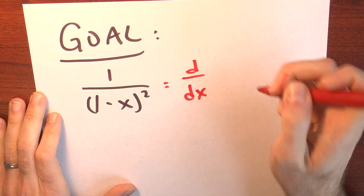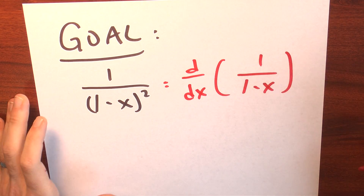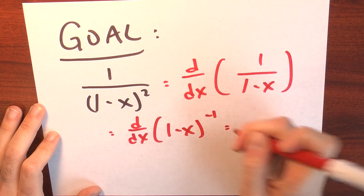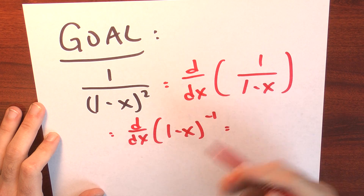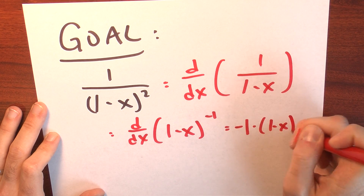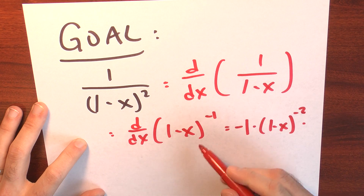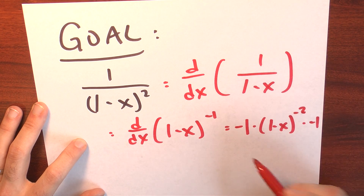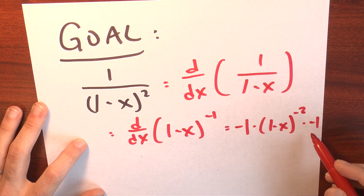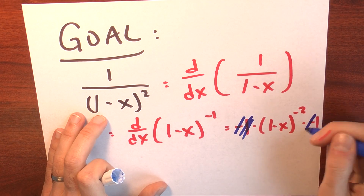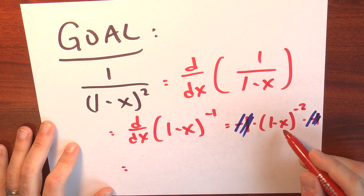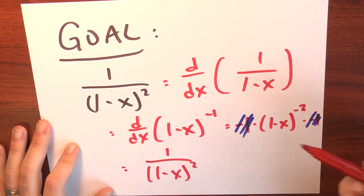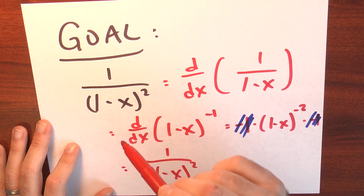This is the derivative of 1 over 1 minus x. Let's just work it out. This is the derivative of 1 minus x to the minus first power. Differentiating this using the power rule, that's negative 1 times 1 minus x to the negative second power, times the derivative of the inside by the chain rule, which is multiplying by another copy of minus 1. So this is minus 1 times 1 minus x to the negative second power, times minus 1. These minus 1's cancel, and what I'm left with is 1 minus x to the minus second power, which I can write as 1 over 1 minus x squared.